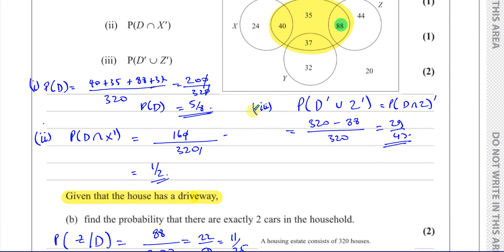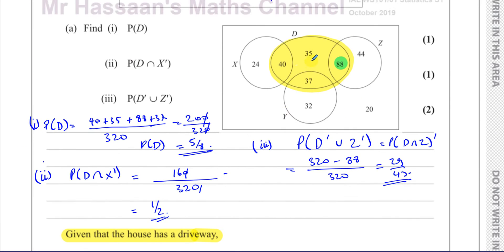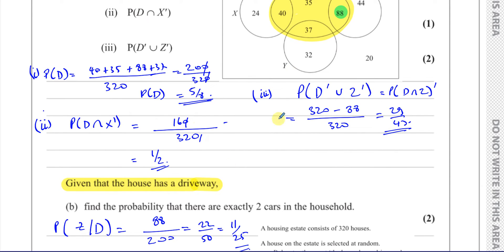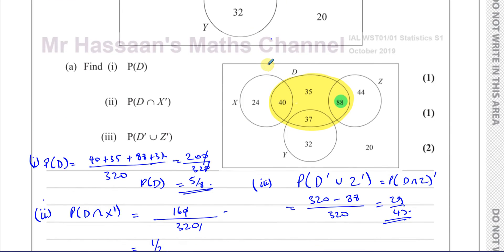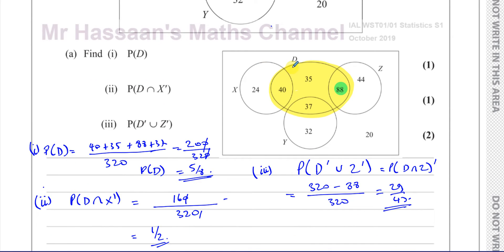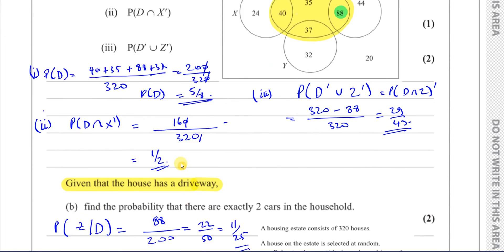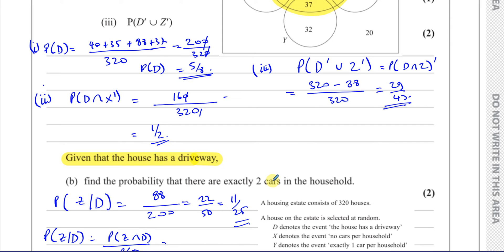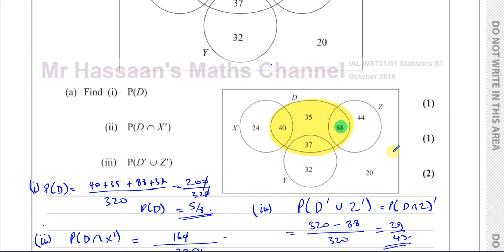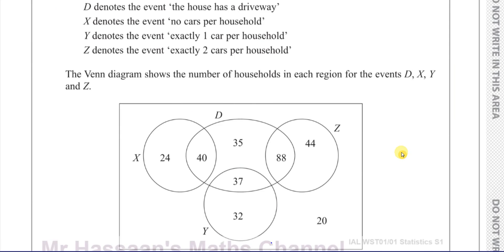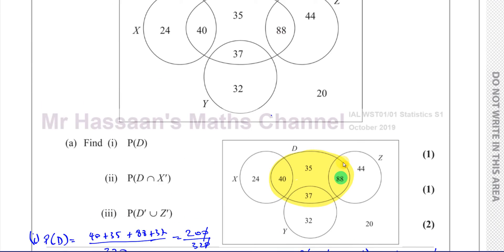But when you've got the Venn diagram, it's easy to just think: we are now making the driveway our sample set. We're not looking at all the people in this estate — we're only looking at the people who have a driveway, and then finding the probability that from those people, how many have exactly two cars in their household. So that's the answer to question number 5A and B.